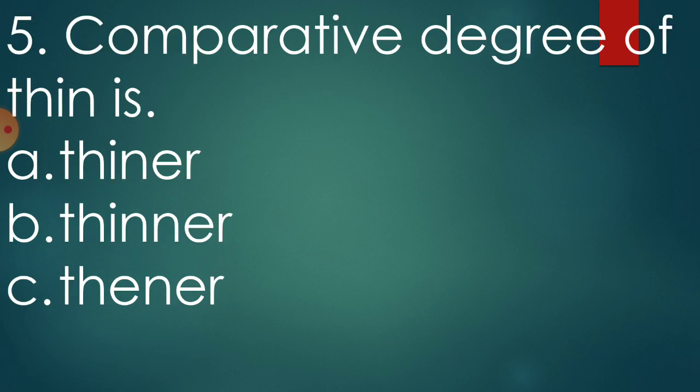This question is from degrees of comparison. You remember children, we have studied three degrees of comparison. Positive degree, comparative degree and superlative degree. So, comparative degree of thin is what? Is it THINER, THINER, THINER, THINER or THINER, THINER. Which will be the correct answer? It is option B, THINNER, THINNER, THINNER is the correct answer.